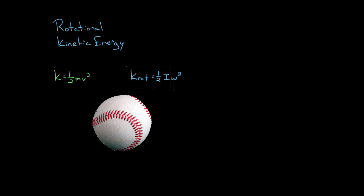In this video, we need to actually derive this, because that's not really a derivation - we didn't really prove this; we just showed that it's plausible. So how do we prove that this is the rotational kinetic energy of an object that's rotating like a baseball?